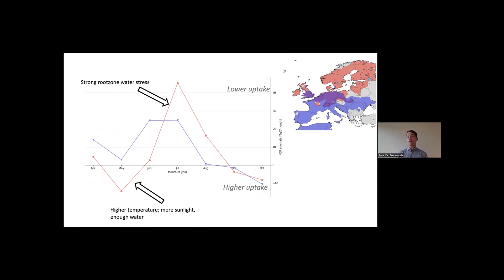So now we can explain what we see. We see enhanced uptake because of higher temperatures, often paired with more sunlight. And there was still enough water. Plants were not stressed yet. Then water levels in the soil reach a certain threshold, and plants start to experience stress. But we do not see this for 2022. We see a reduction from the start on, from April, May onwards, and not as strong of a response in July. So how can we explain that?